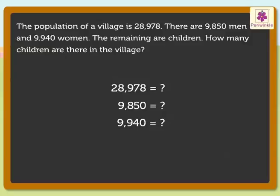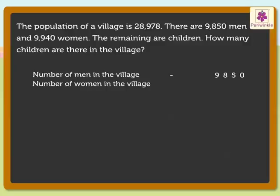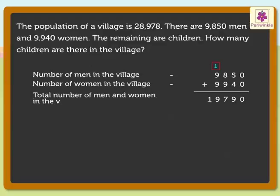Now, let us solve this problem. Number of men in the village: 9,850. Number of women in the village: 9,940. Now, let us add these numbers. Thus, the total number of men and women in the village is 19,790.